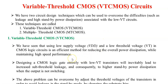In this video we will see both technologies. First, the variable threshold CMOS circuit. In the VTCMOS circuit, we utilize low supply voltages as well as low threshold voltage for reducing power dissipation. It is an efficient method for reducing overall power dissipation while maintaining high speed performance. The disadvantage is that when the threshold voltage of the transistor is very low, it leads to increased subthreshold leakage current, which causes standby power dissipation.